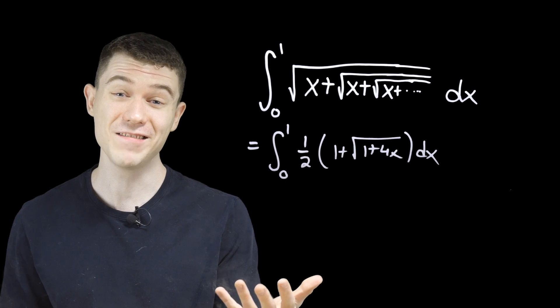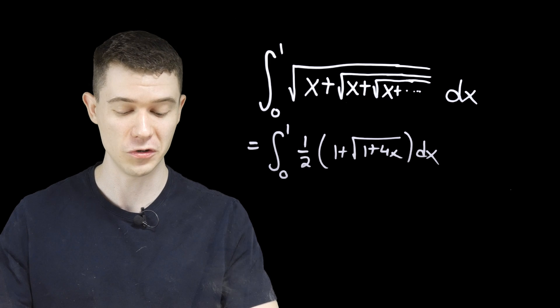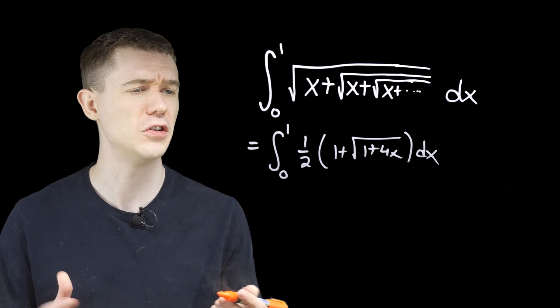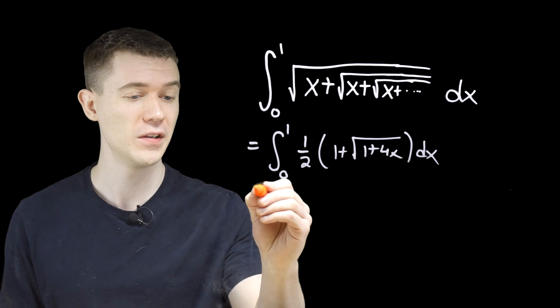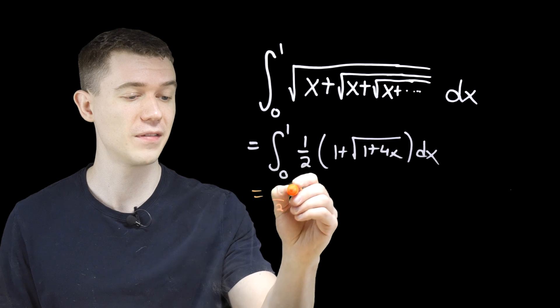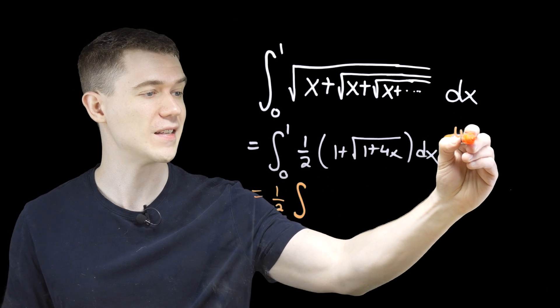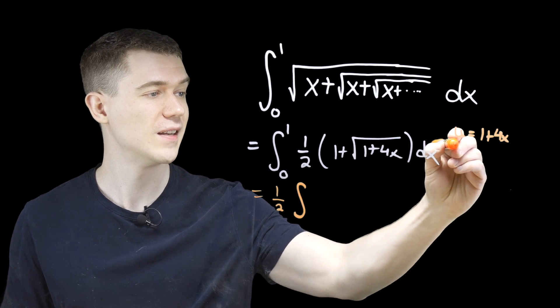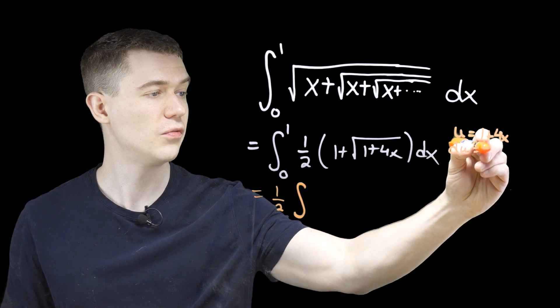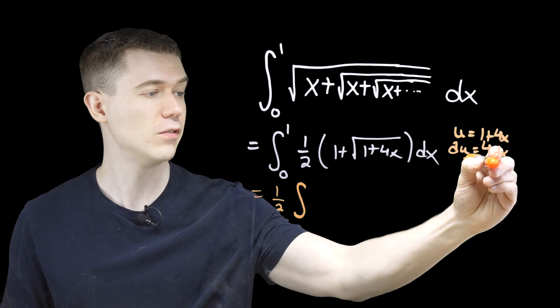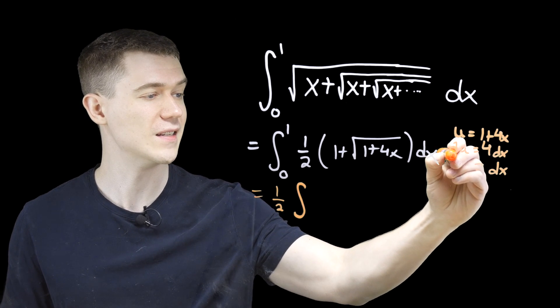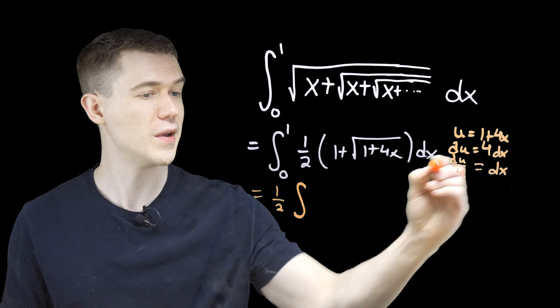And this we can actually solve via a good old u substitution. This could be a problem given to you in a calc one class now. You could take out that one half. That would be fine. And we'll just take u to be the inside of the square root. One plus four x. That makes du four dx. And if you like, you could even say that dx is du over four when we make our substitution.